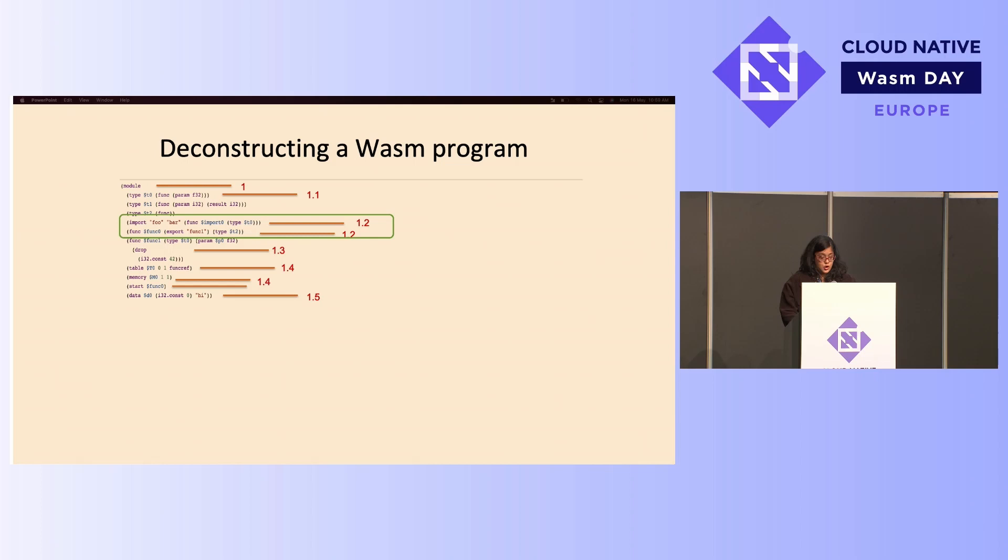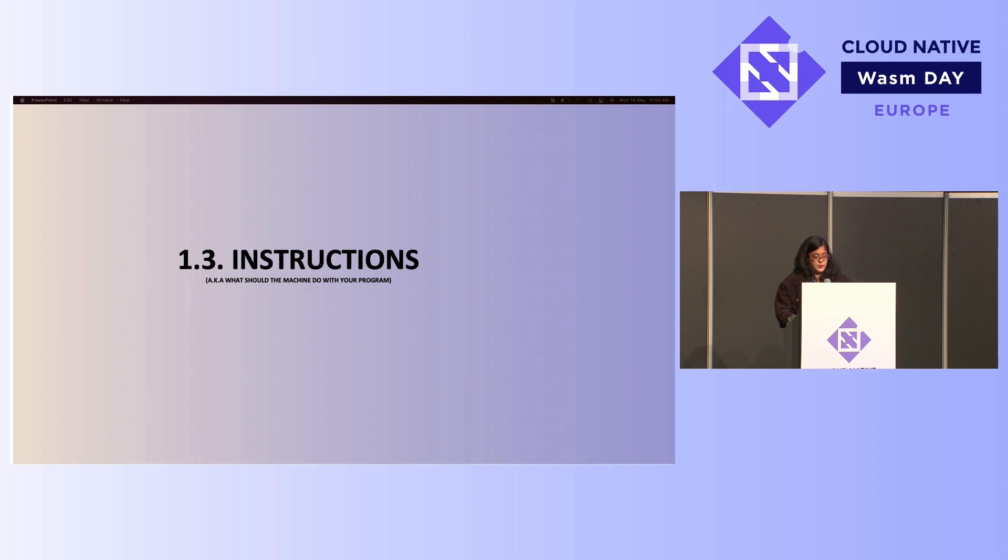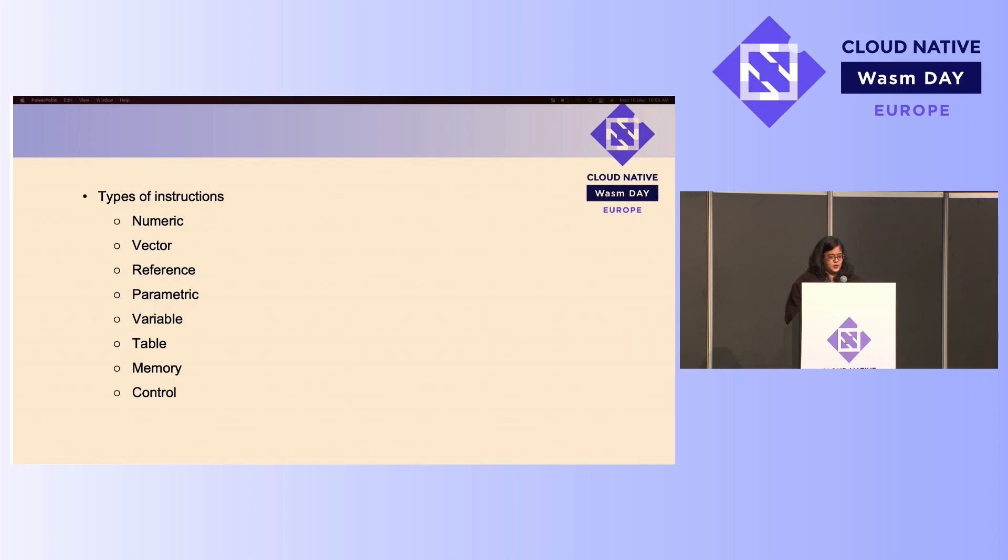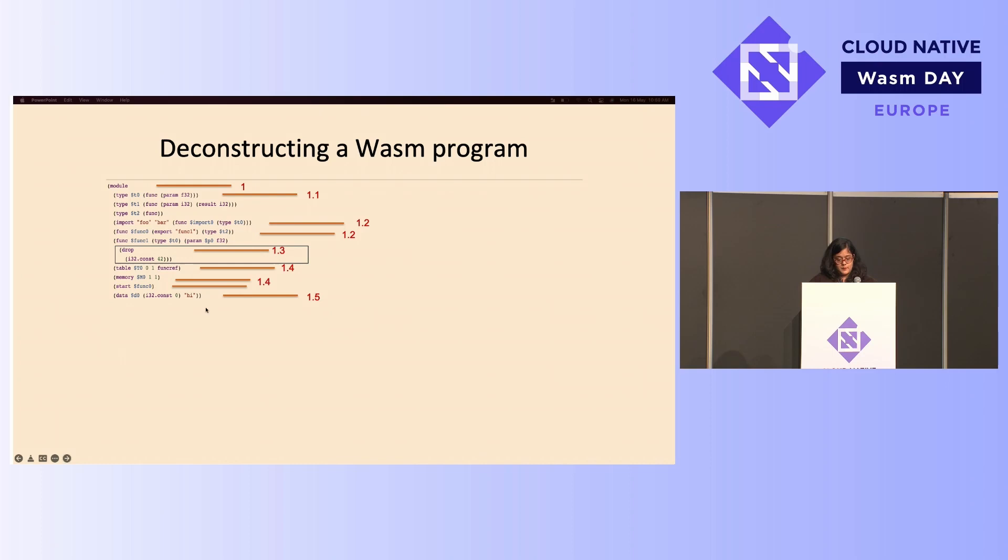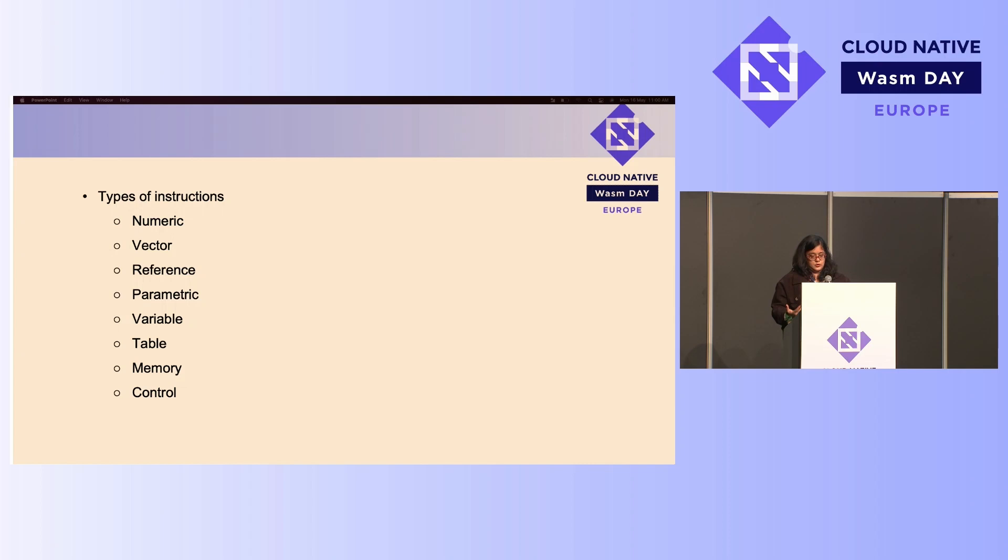Coming to instructions, which obviously are required because instructions form the structure that is required so that the machine knows what to do with the values you pass to it. So there are as many or probably more types of instructions as the number of types. So you have numeric, you have vector, and you probably can read them here, so I'm not going to go over and over again. But in this particular program, we have a drop instruction. And you must be wondering what sort of instruction that falls into. It's a parametric instruction. And just like with the number of types, we basically can use these instructions for both vectors as well as for numeric types.